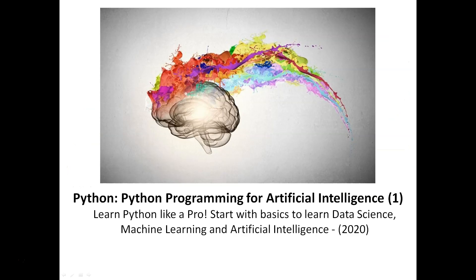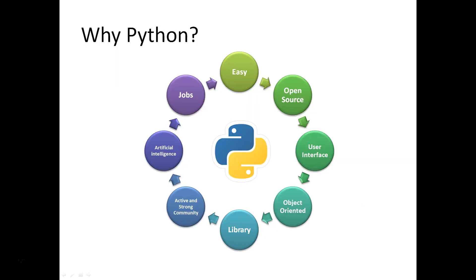Part 1: Programming for Artificial Intelligence is the first course of our seven-course Artificial Intelligence series. You will learn Python professionally and form a solid foundation for artificial intelligence with Python.